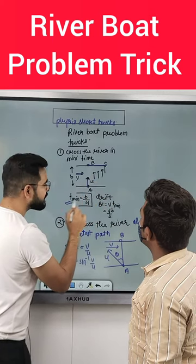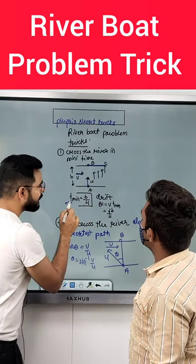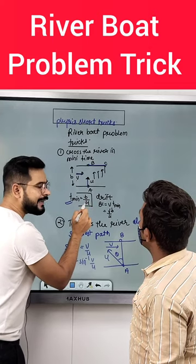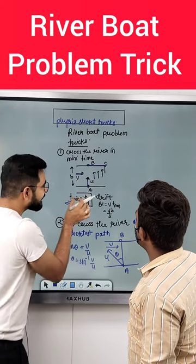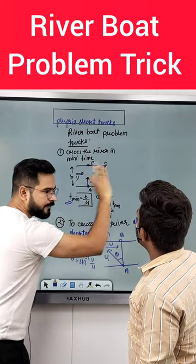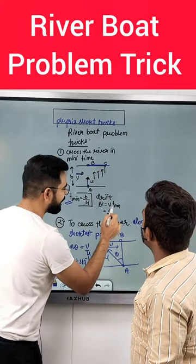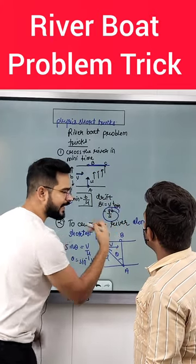So time is equal to distance upon speed. Distance is B and speed is U, so time = B/U. And for the displacement due to water velocity V, the distance BC is equal to V multiplied by time.